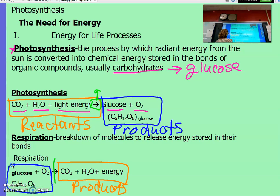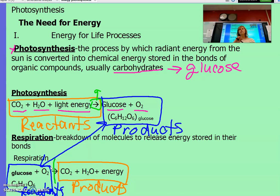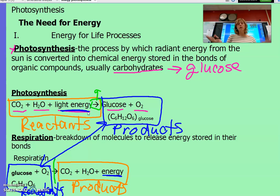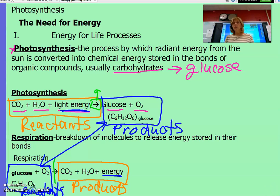Maybe you talked about this in seventh grade life science. In the respiration process, these equations are essentially flipped. The only real difference is that the energy in respiration is not light energy — it's energy in the form of ATP. Plants make glucose through photosynthesis, and then plants and animals both break that down through cellular respiration. That's how we harvest energy from the sun and transfer it to living organisms.